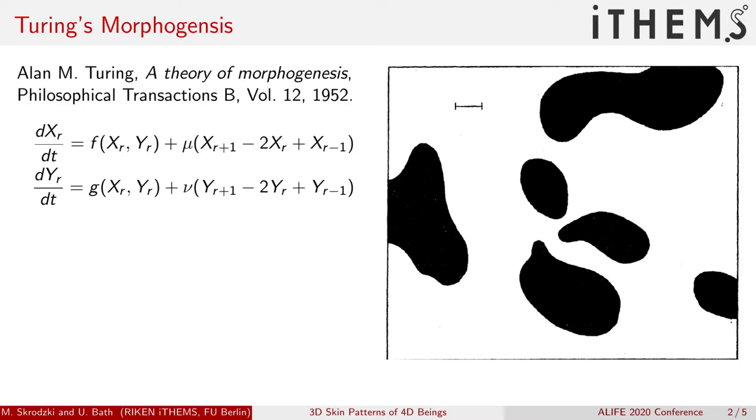He assumed that there are two morphogens, one activating and one inhibiting morphogen, that interact with each other and form these intriguing patterns. The image on the right hand side is actually an image taken from Turing's original publication.